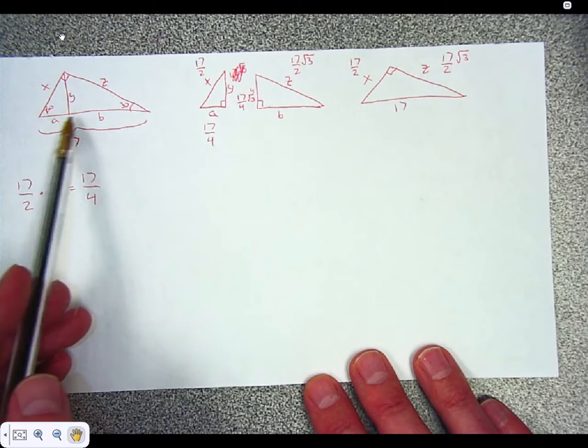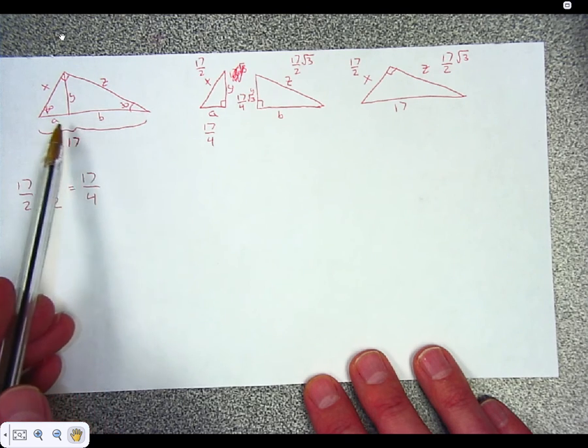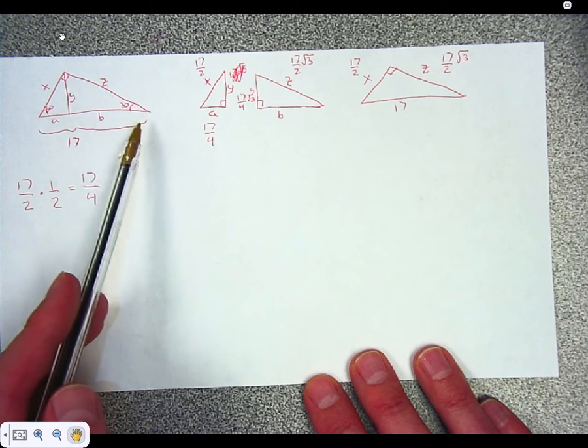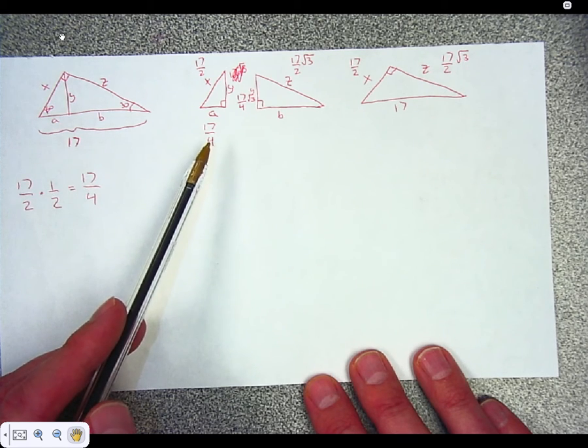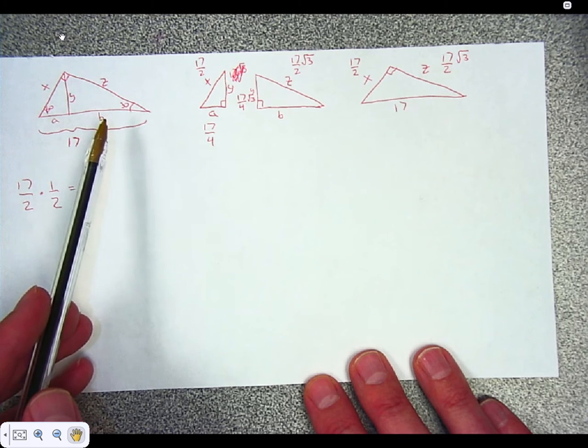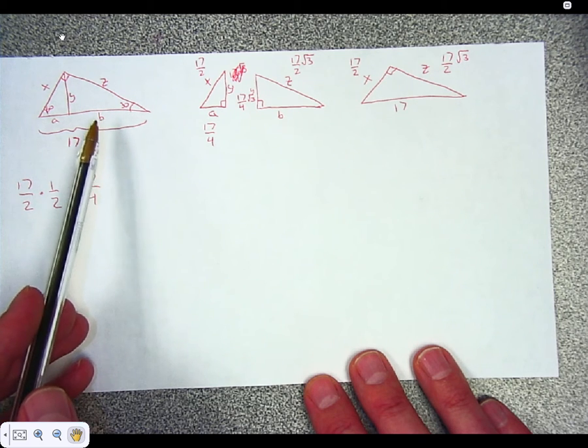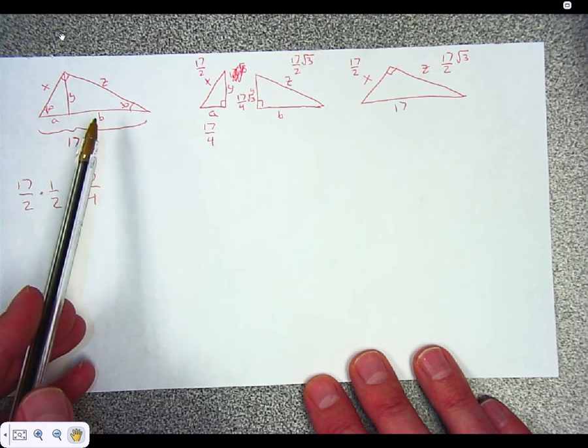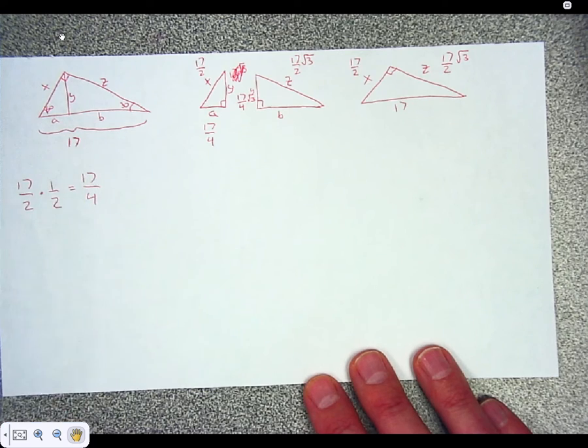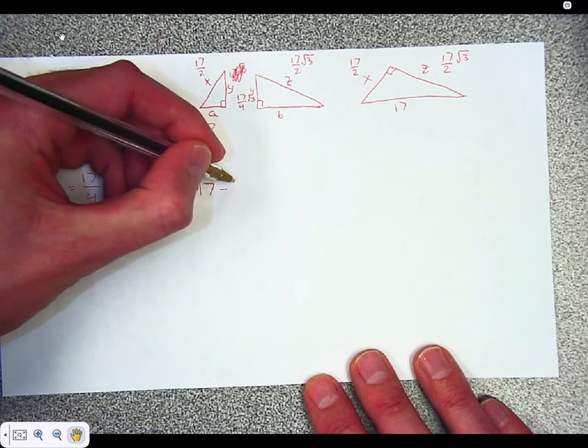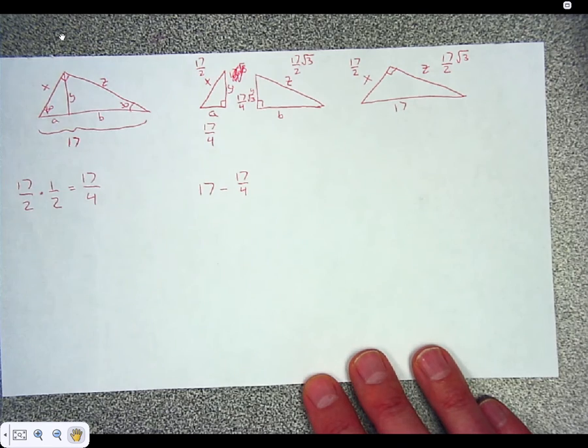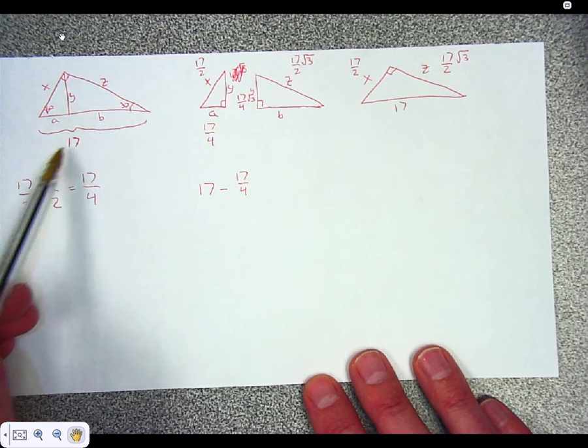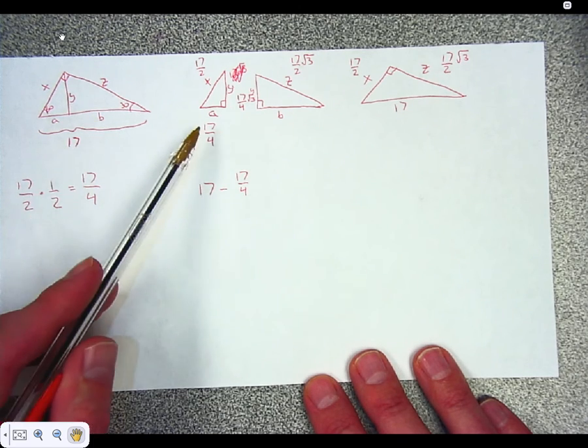We know that this whole side is 17, because it was told, we were given that information. We now know what A is. A is 17 fourths. I can find what's missing then, B. B is the last little bit. A plus B together has to be 17. So if I take 17 and I subtract 17 fourths, I'm going to get my answer, B. Because together A and B have to make 17. And we know A is 17 fourths.